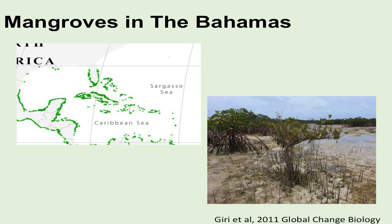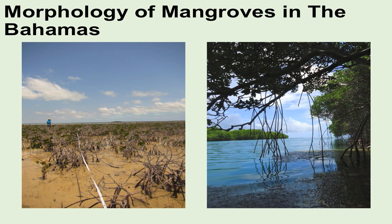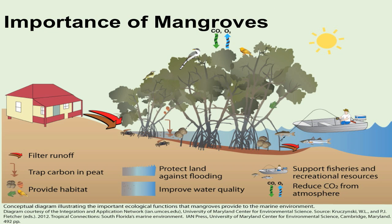In the Bahamas you also see different morphologies of those mangroves. For example, you can see tall fringing red mangroves like this, and you can also see short dwarf-statured mangroves just like this. For the case study I'll be talking about, it'll be about these dwarf red mangroves.